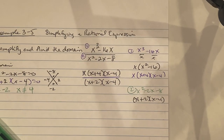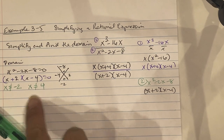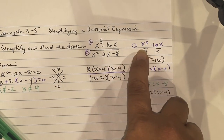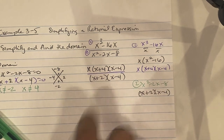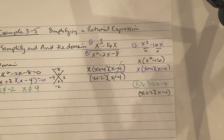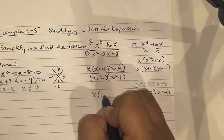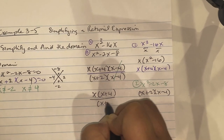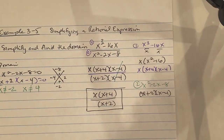We found the domain and factored both numerator and denominator. Now cancel like terms: x minus 4 cancels out. The simplified answer is x times x plus 4 over x plus 2.